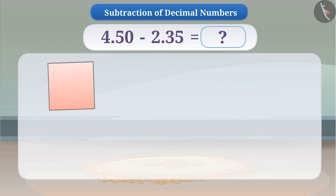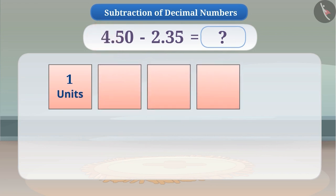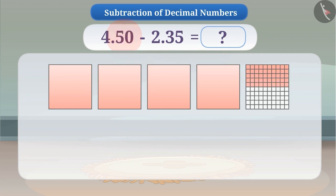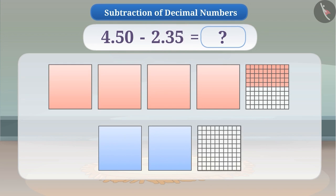To subtract these numbers, we will draw a square and consider each square as one whole or one unit. In 4.5, 4 is the whole, so we will take 4 squares and to represent 50 hundredths, we will take another square and divide it into 100 parts. We will shade 50 parts out of the 100 equal parts. In 2.35, 2 is the whole, so we take 2 squares and to represent 35 hundredths, we will take another square and divide it into 100 parts and shade 35 out of the 100.